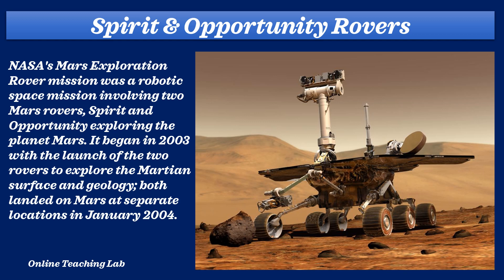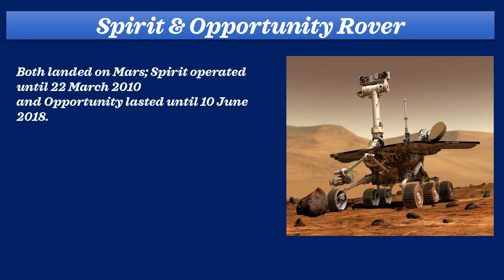Spirit and Opportunity rovers: NASA's Mars Exploration Rover mission was a robotic space mission involving two Mars rovers, Spirit and Opportunity, exploring the planet Mars. It began in 2003 with the launch of the two rovers to explore the Martian surface and geology. Both landed on Mars at separate locations in January 2004. Spirit operated until 22nd March 2010, and the Opportunity rover lasted until 10th June 2018.